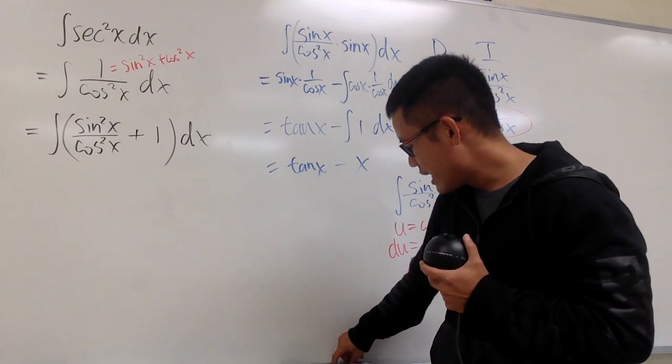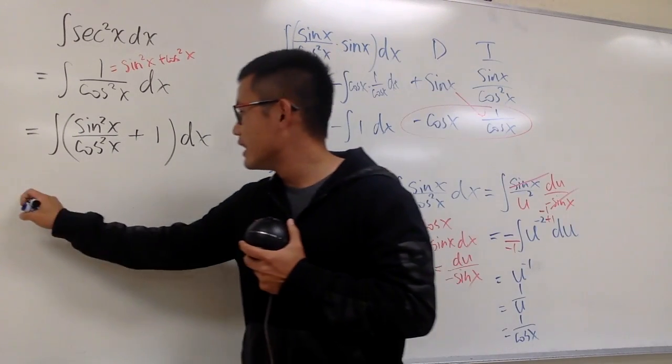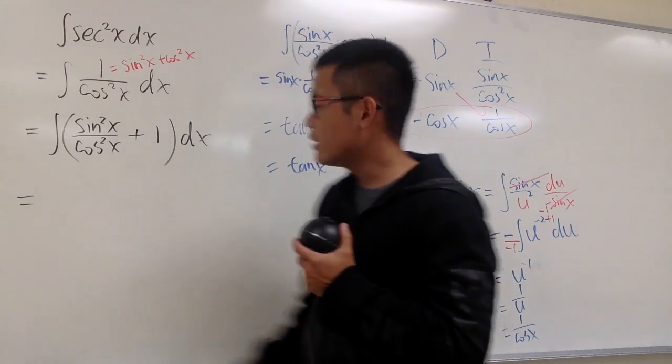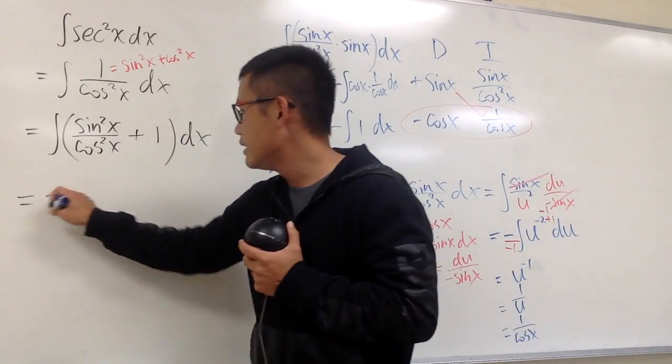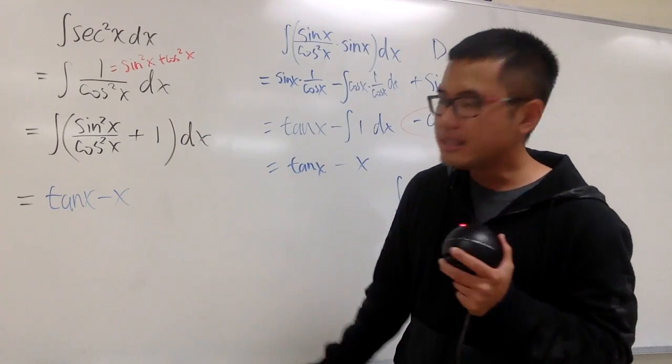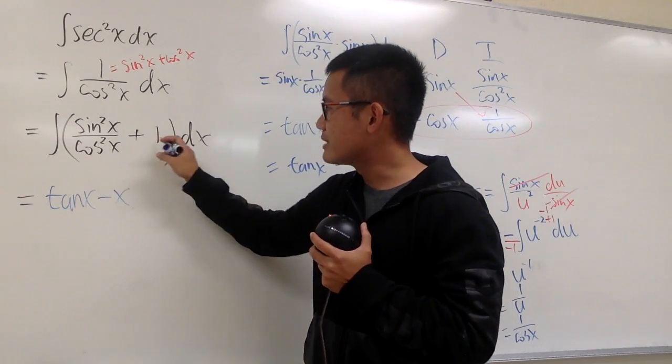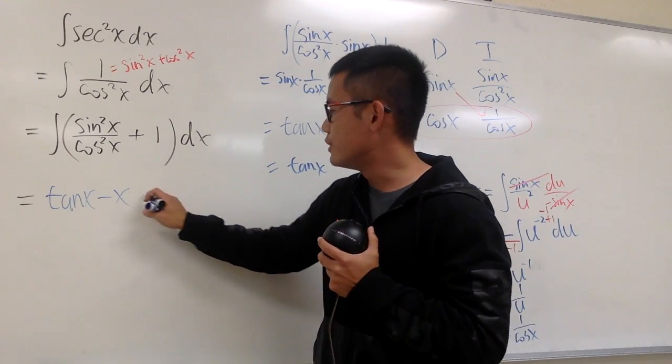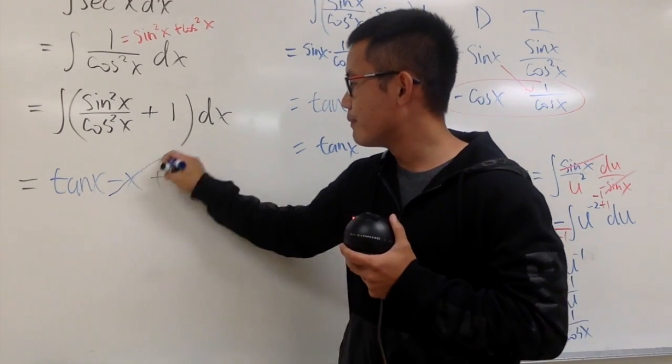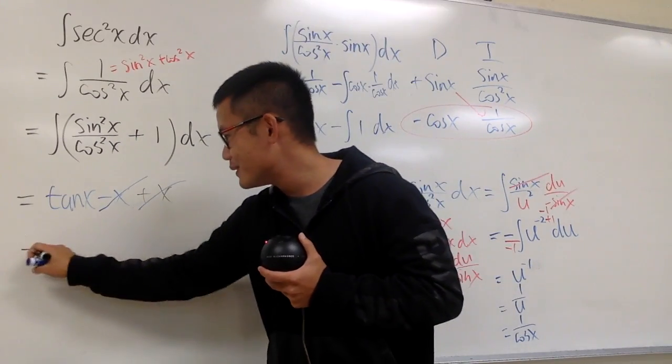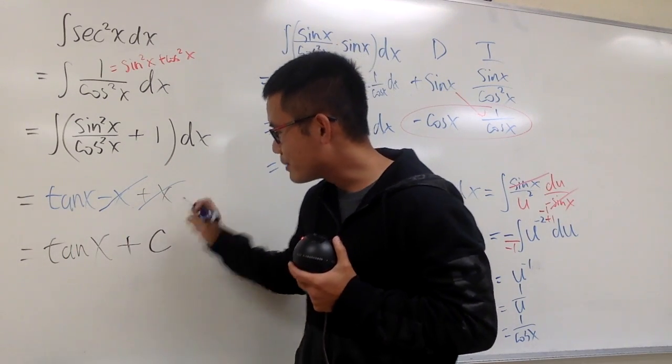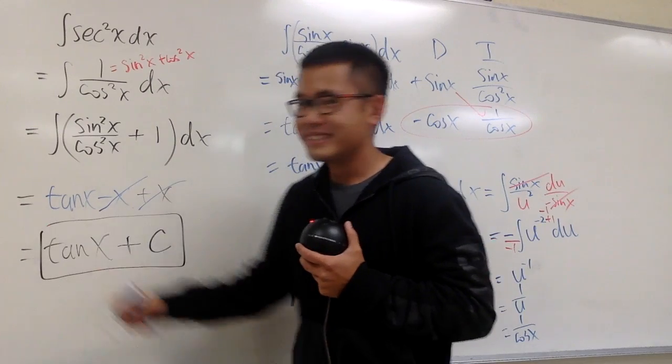So now at the end, you will see that this is going to be the integral of this right here. It's the blue result. It is tangent x minus x. And we have to integrate the positive 1 in the x world, which is just plus x. This is tangent x. And we are done. At the end, put plus c.